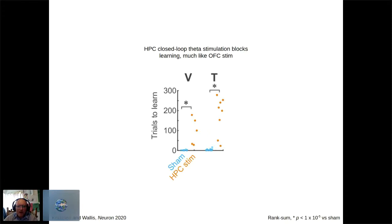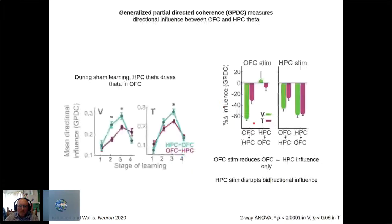We redid our stimulation experiment using hippocampal theta as the control signal and stimulating hippocampus. We essentially recapitulated the OFC stimulation results, with even larger behavioral learning deficits. We then asked whether there is a driving force — which area is informing the other more prominently?